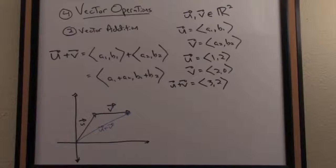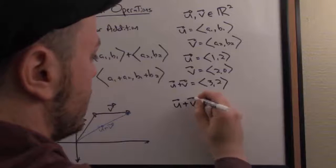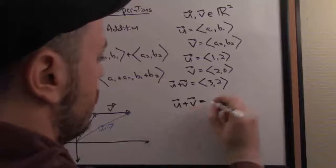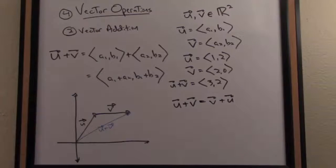Addition has a really nice property that the order doesn't matter. So 1 plus 2 is the same as 2 plus 1, for instance, right? Well, that property extends for vectors. In other words, u plus v is equal to v plus u in the opposite order. This property is known as the commutative property of vector addition.